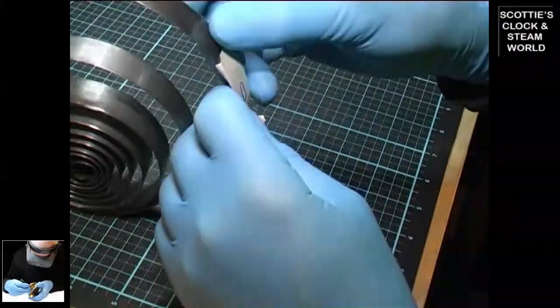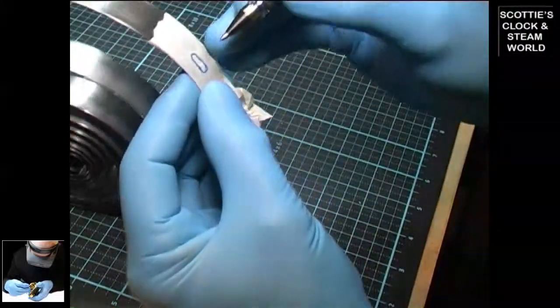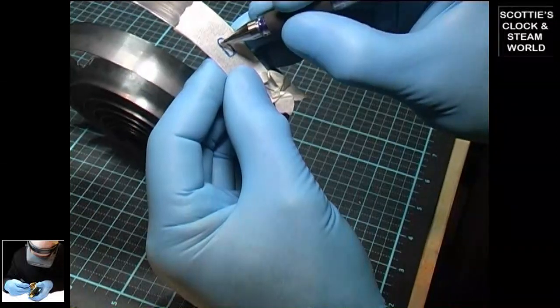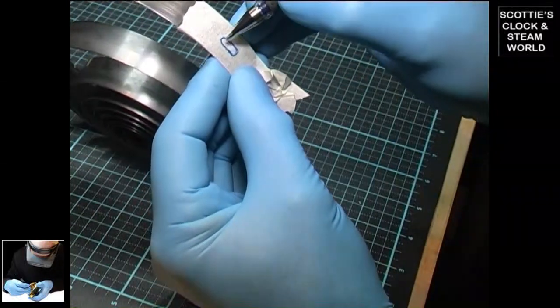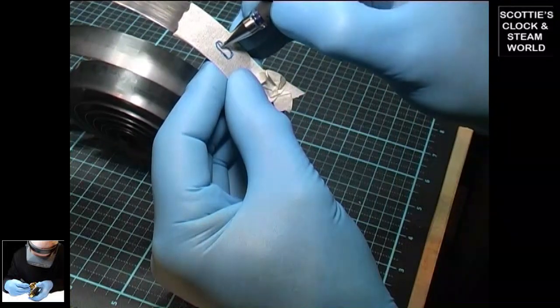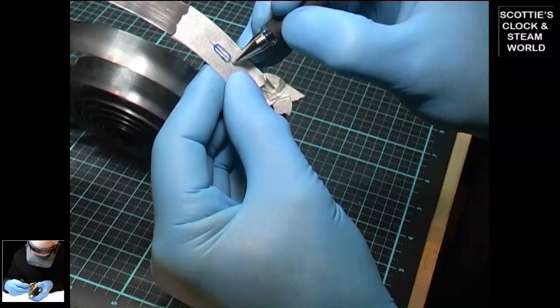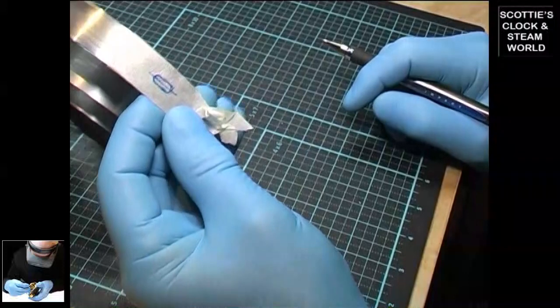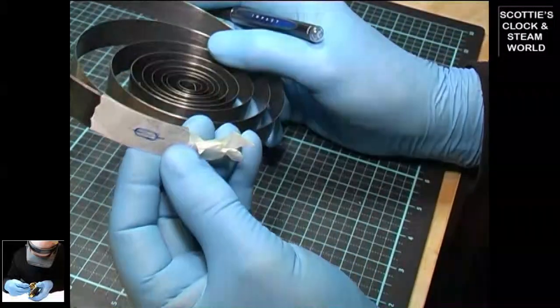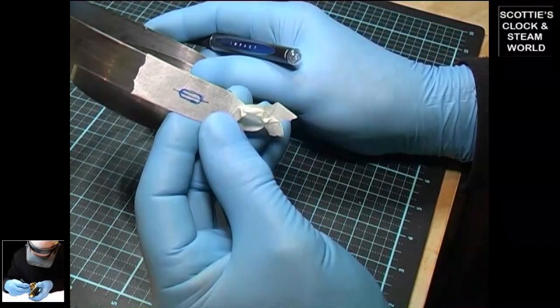Okay, next step. We need to draw a line in the center of both radiuses so we know where to put the punch. There we have it.